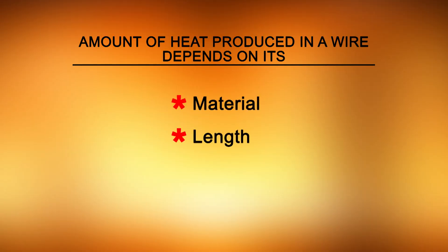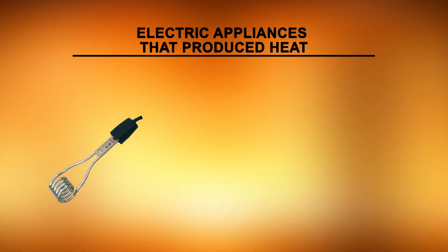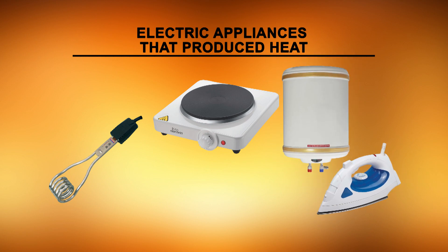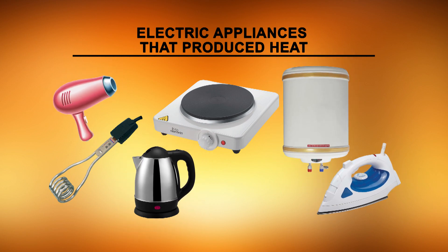This wastage can be reduced by using fluorescent tube lights in place of bulbs. Compact fluorescent lamps, shortly CFLs, also reduce wastage and can be fixed in ordinary tube holders. Remember, the amount of heat produced in a wire depends on its material, length, and thickness. Thus for different requirements, wires of different materials, lengths, and thicknesses are used. Electric appliances such as immersion heaters, hot plates, irons, geysers, electric kettles, and hair dryers, when connected to electric current, produce heat.